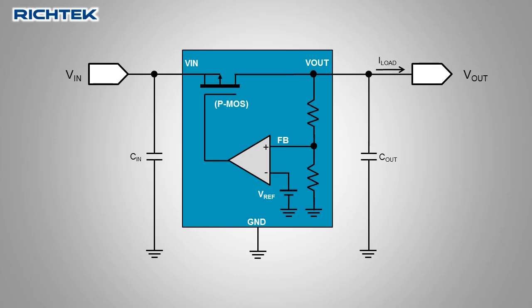To regulate the output voltage, the error amplifier controls the p-MOSFET gate voltage with respect to VIN, thereby controlling the MOSFET conduction level.